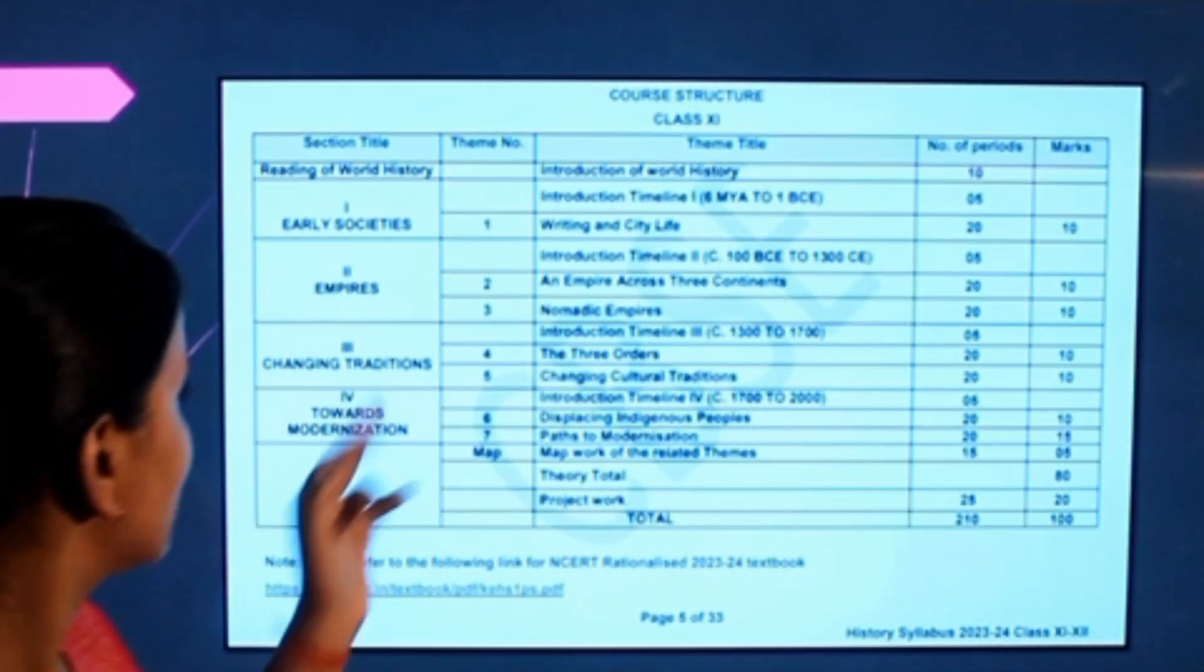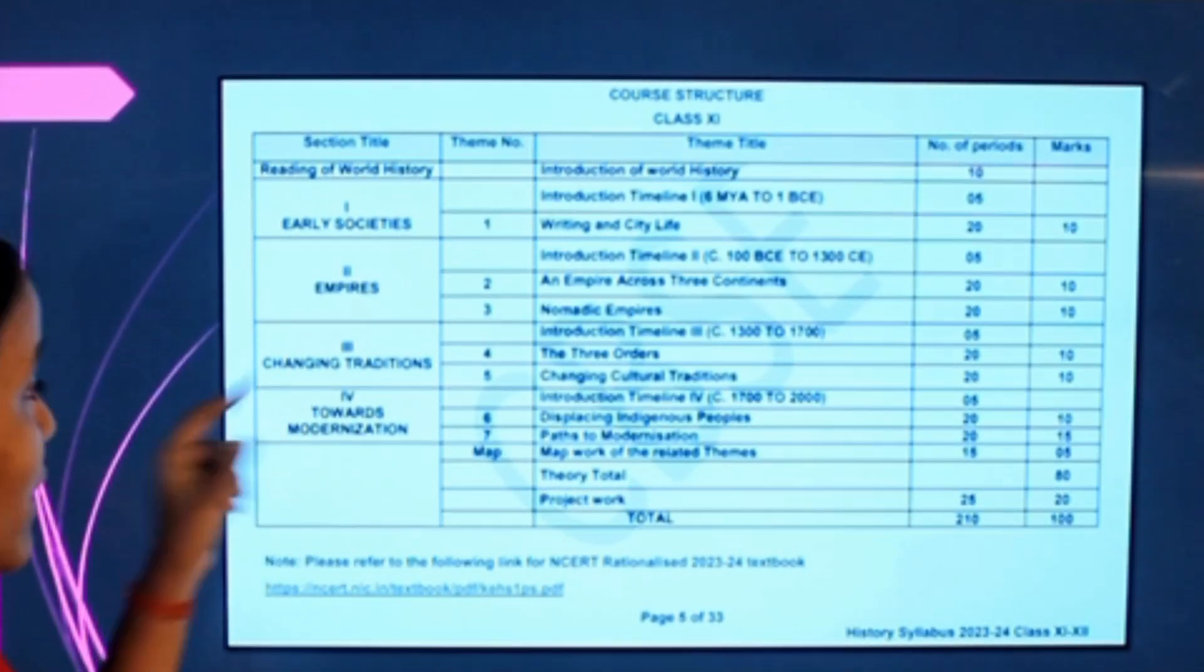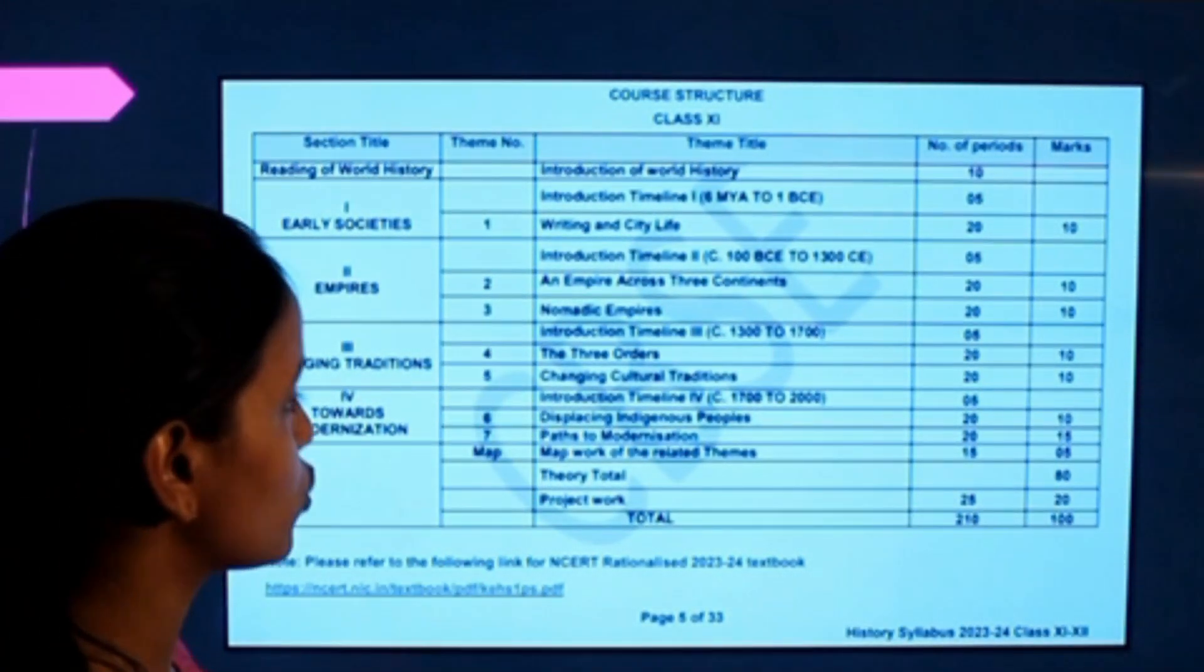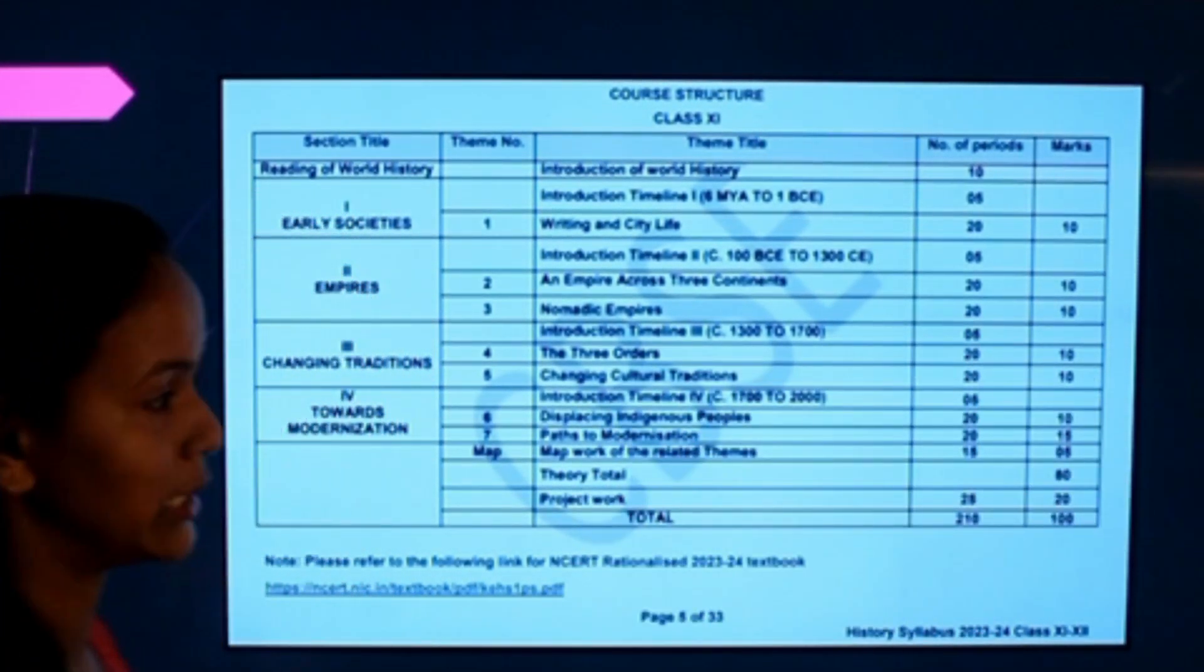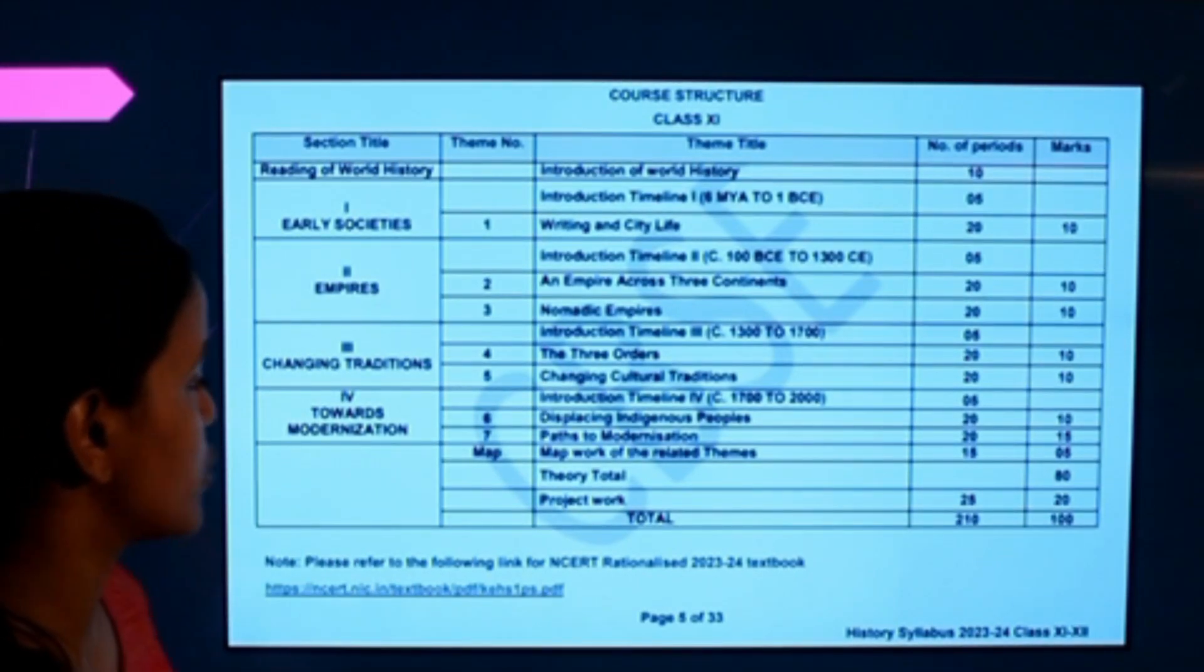Next, Part 3 is Changing Traditions. The Three Orders which is of 10 marks, and Changing Cultural Tradition of 10 marks. Towards Modernization...